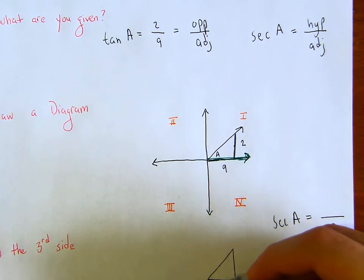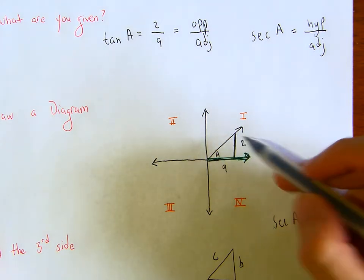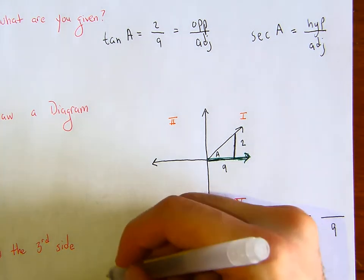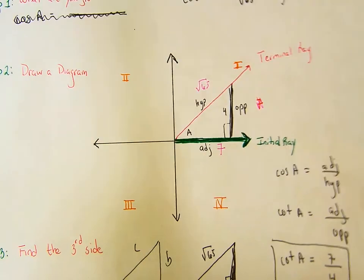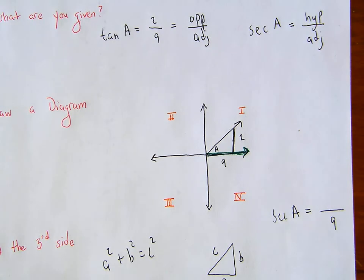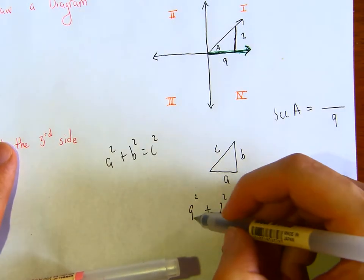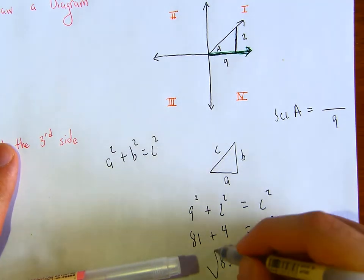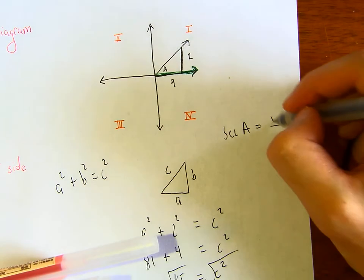To find the hypotenuse, notice we have sides a and b but are missing c. In the previous problem we didn't have one of the legs but knew the hypotenuse — here we have both legs and are missing the hypotenuse. So: 9 squared plus 2 squared equals c squared, which is 81 plus 4 equals c squared, so 85 equals c squared. Take the square root of both sides: c equals square root of 85.